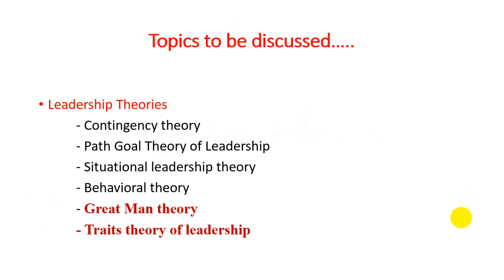If you remember, dear students, in the last few lectures we started to discuss theories in relation to the subject of leadership — we call them leadership theories. Previously we talked about four important theories: contingency leadership theory, path-goal theory of leadership, situational leadership theory, and behavior leadership theory. Each of these theories has different assumptions and different beliefs.